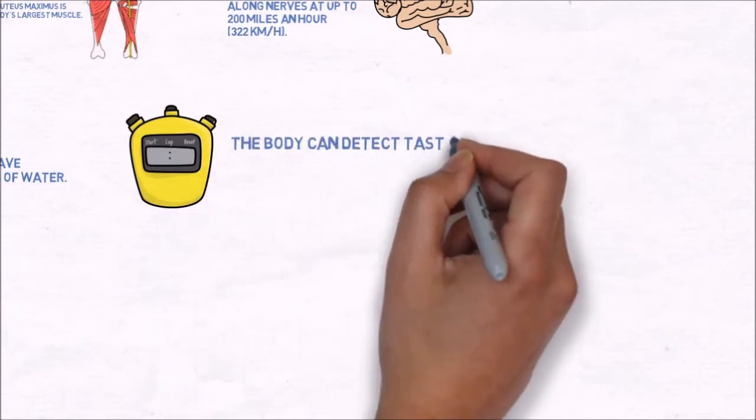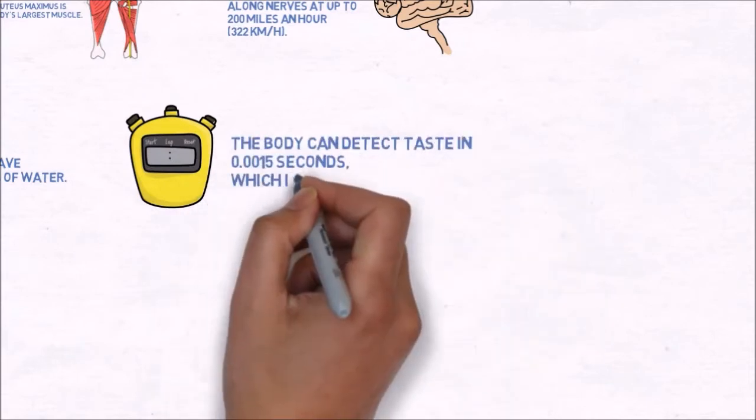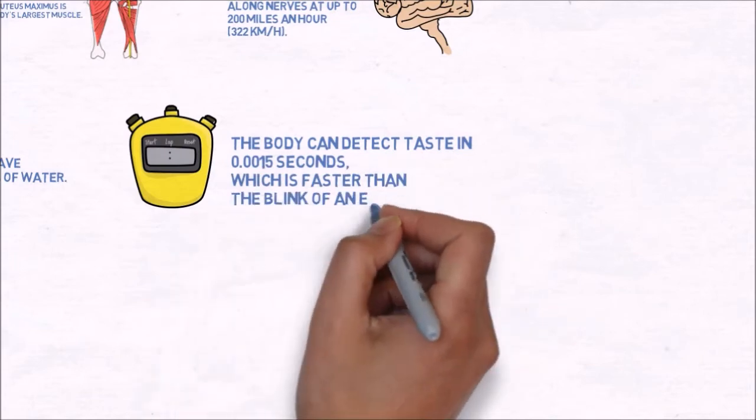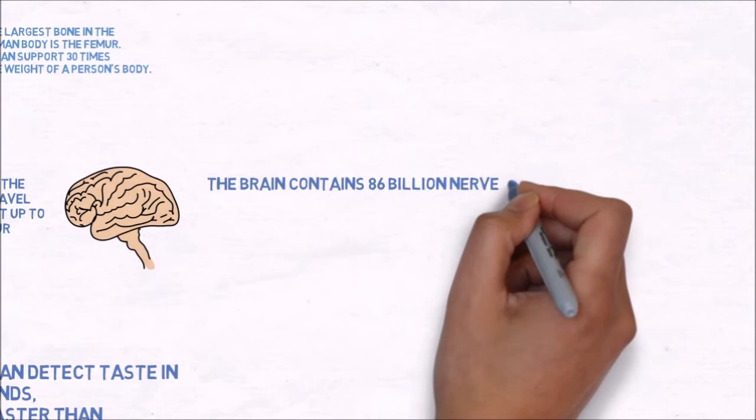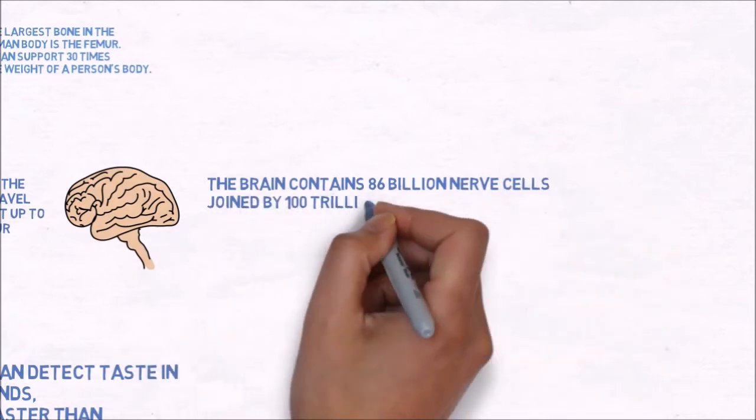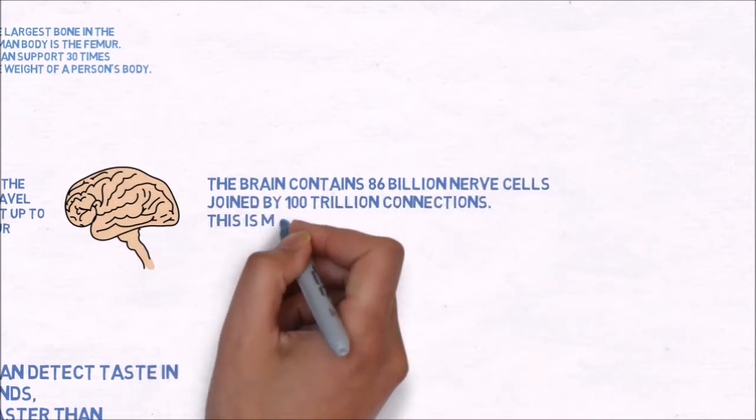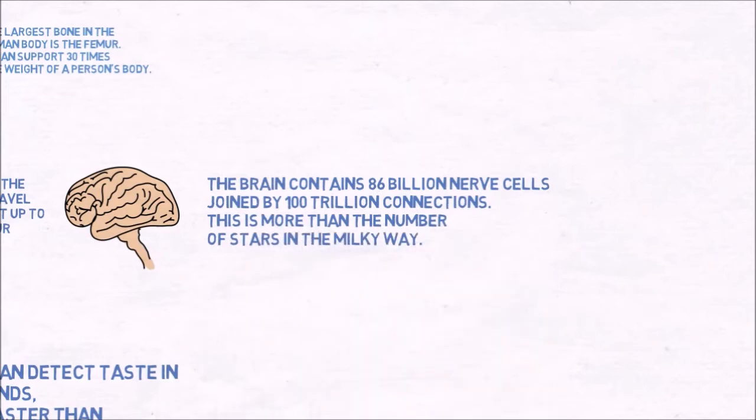The body can detect taste in 0.0015 seconds, which is faster than the blink of an eye. The brain contains 86 billion nerve cells joined by 100 trillion connections. This is more than the number of stars in the Milky Way.